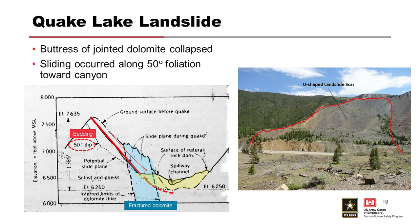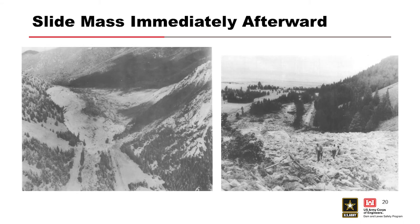Here is the Quake Lake landslide. It occurred along a 50-degree foliation toward the canyon. The buttress was formed by dolomite. When the driving force broke this buttress of jointed dolomite and it collapsed, the whole slide just went. You can see what it looked like prior and the landslide scar. Immediately after the slide, you can see the whole mass movement on the left, with the scarp on the right side of the first slide picture having moved across the valley.